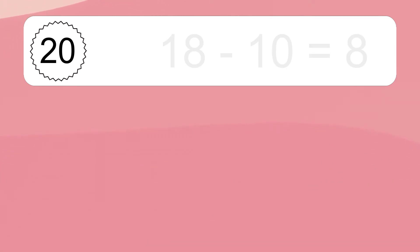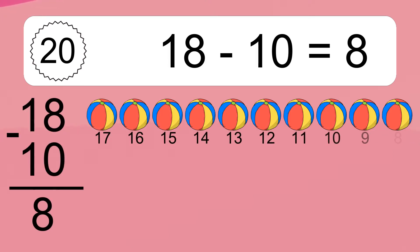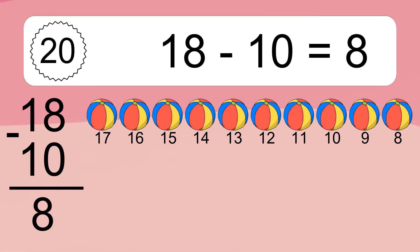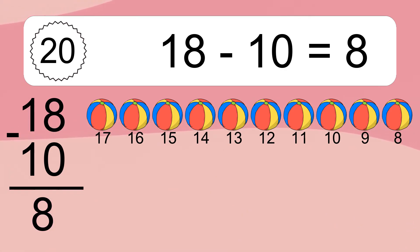18 minus 10 equals what? 18 minus 10 equals 8. Let's count it: 17, 16, 15, 14, 13, 12, 11, 10, 9, 8.